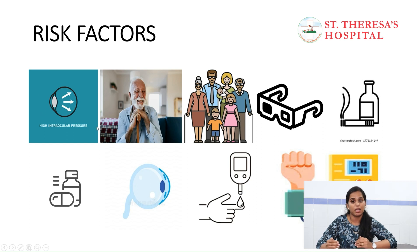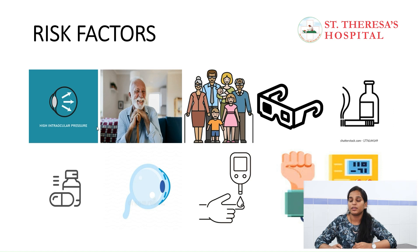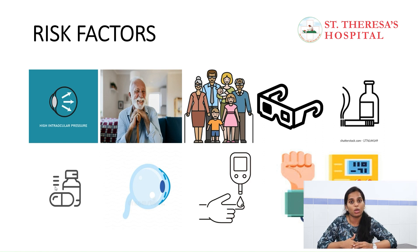High spectacle numbers — minus 5, minus 6 and above — are risk factors. Plus numbers are also prone, as the eyeballs are compact in structure. Alcohol and smoking are also risk factors. Steroid supplements — tablets, injections, and even steroid eye drops with long-term use — can cause steroid-induced glaucoma.